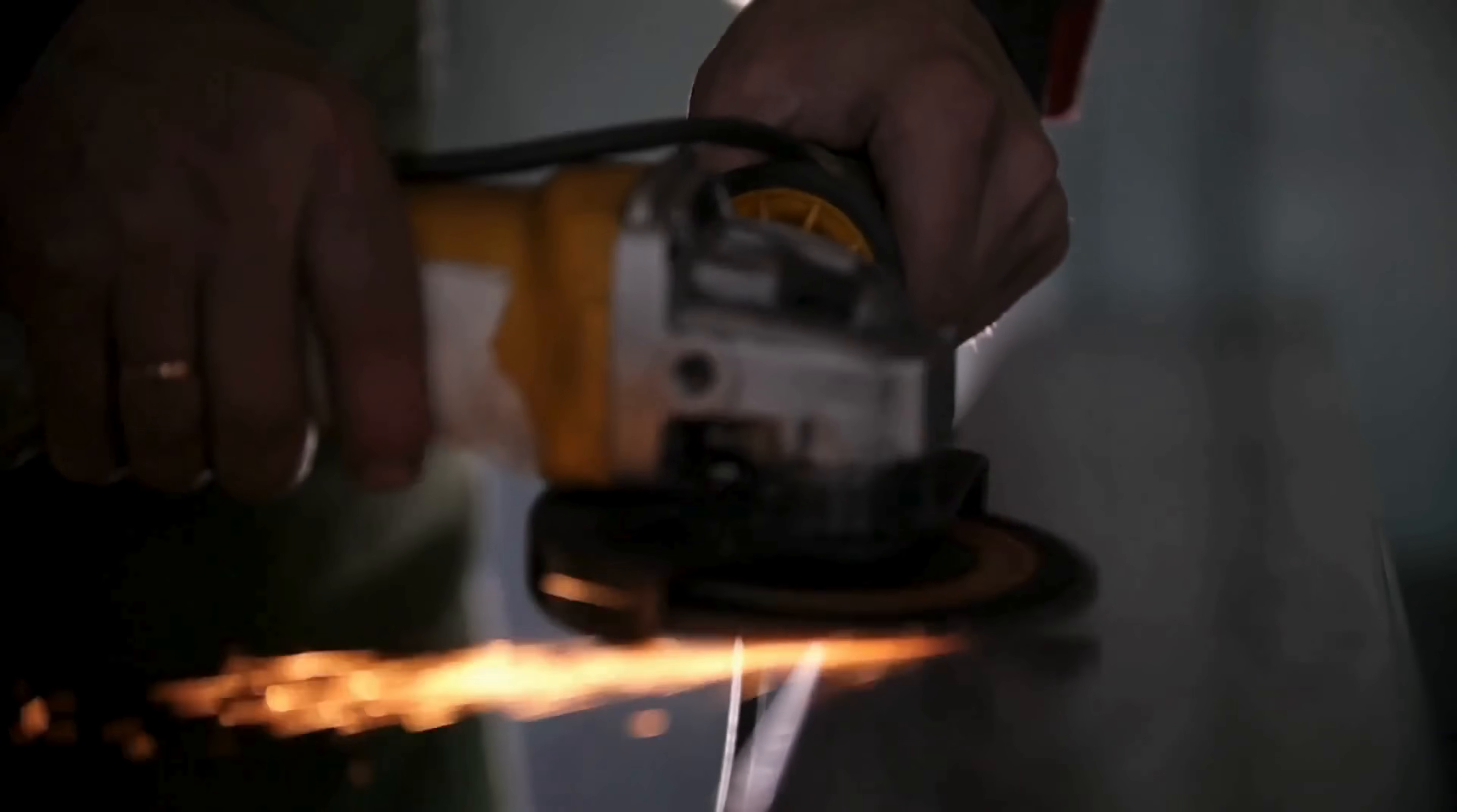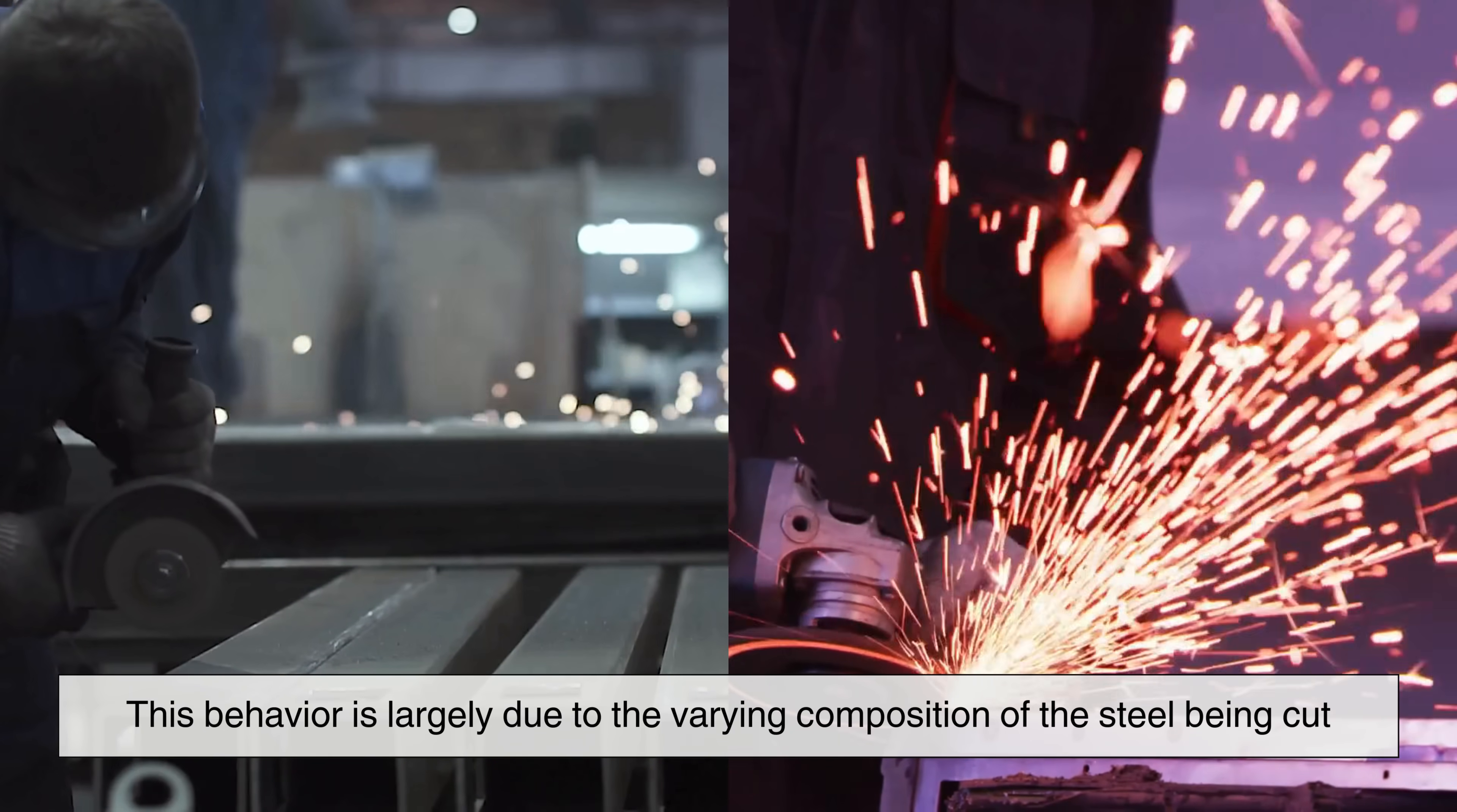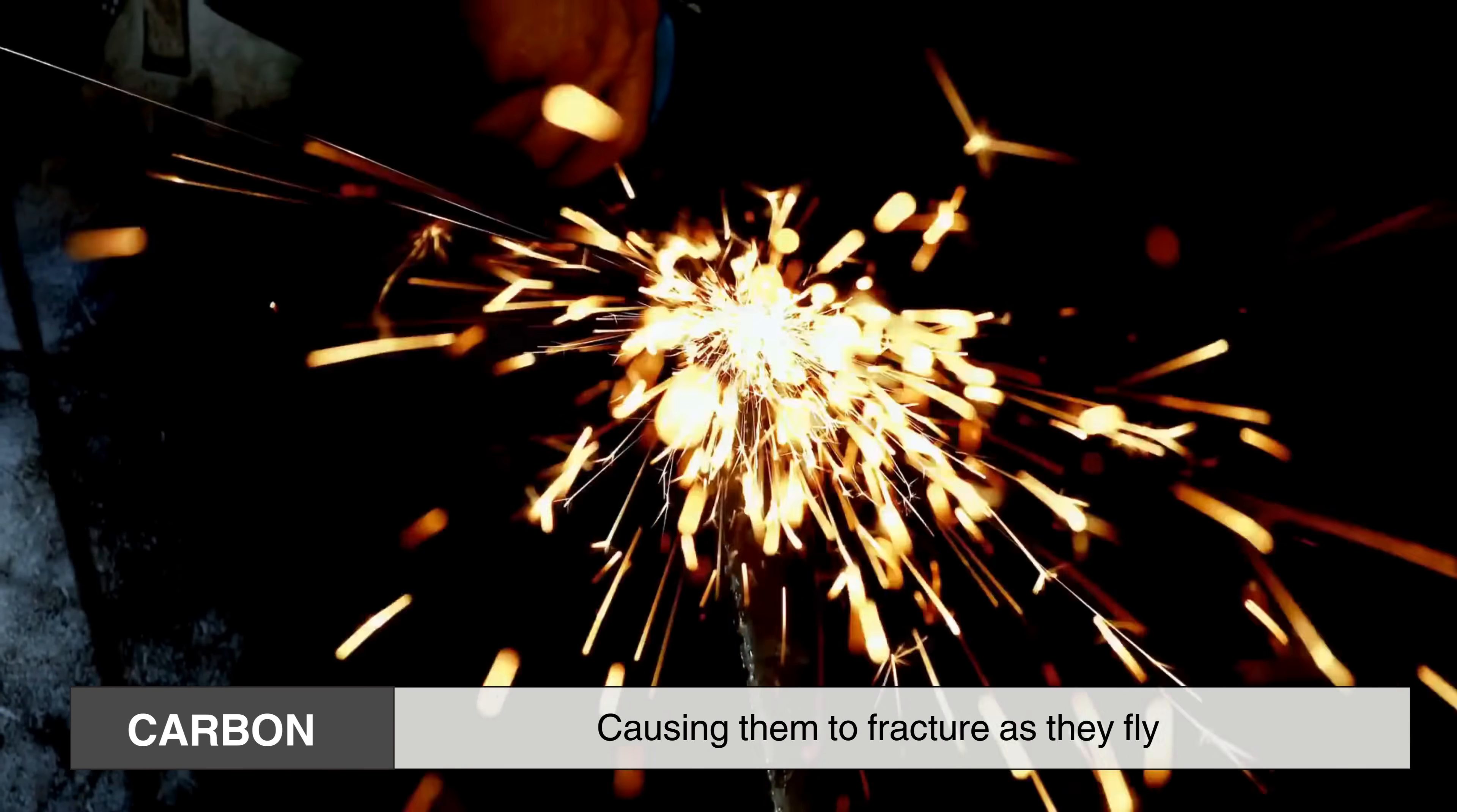One of the fascinating aspects of these sparks is their shape and trajectory. If you observe closely, you'll notice that some sparks travel in straight lines while others burst apart into smaller fragments midair. This behavior is largely due to the varying composition of the steel being cut. Higher carbon steels, for example, tend to produce sparks that branch out, forming star-like patterns. This happens because carbon increases the brittleness of the sparks, causing them to fracture as they fly.